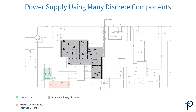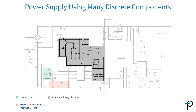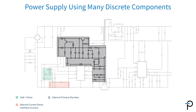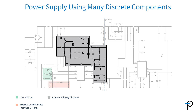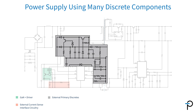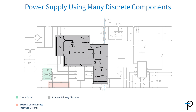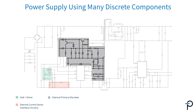Another thing worth taking a look at is the amount of bias circuitry that's required. This is because the power supply itself needs to operate over a wide dynamic range, and that means the power supply for the controller chip needs to be conditioned within the acceptable limits of the controller.